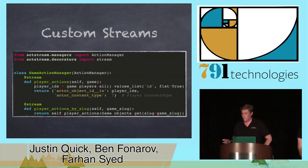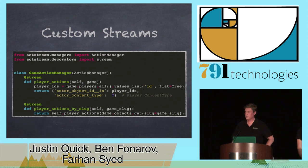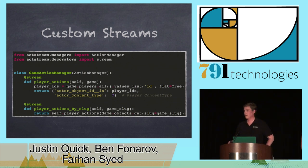There are also custom streams, which are easy to implement. This first example, 'player_actions,' takes a game instance, finds out the player IDs in this game, and returns a query saying: show me all the actions where the players of this game were the actor, by object ID and content type. The stream decorator gives you power where you can just return queryset arguments or keyword argument filters — you don't have to return a queryset. The second example, 'player_actions_by_slug,' does the same thing but takes a slug instead of an instance, which becomes useful a bit later.